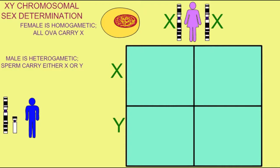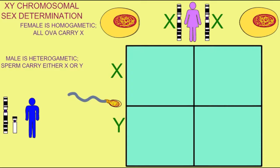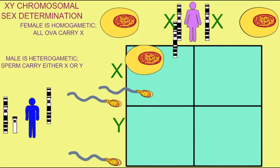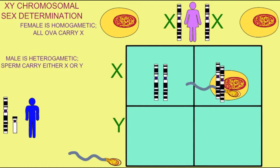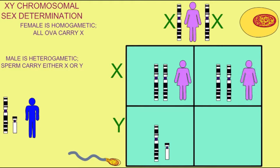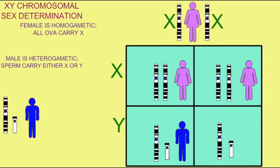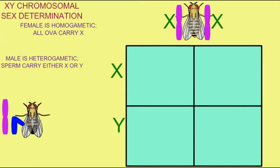Heterogametic refers to a gender which produces two types of gametes. In humans, all women put an X chromosome in their ova, so all ova are the same in this regard, so women are the homogametic gender. Men, because they have a large X and a small Y chromosome, meiosis results in half the sperm having an X chromosome and half the sperm having a Y chromosome. Thus, the male gametes are different, and males are the heterogametic gender — hetero meaning different.